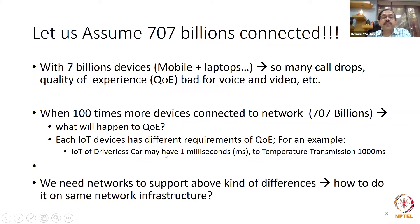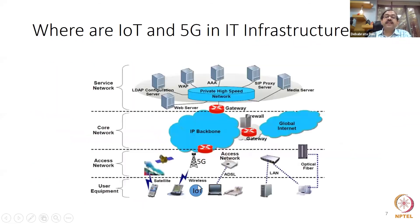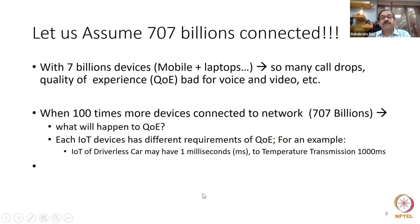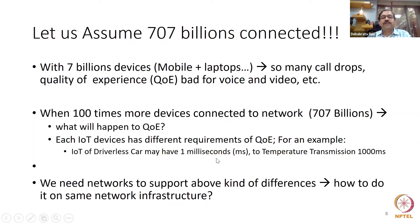Same infrastructure — like the same road — two kinds of demand: how to do that? It's not easy. We need a network to support the above kinds of differences. Quality of service from one millisecond to thousand milliseconds in the wireless network, and from 7 billion to 707 billion devices — how to support this in the same network infrastructure? That is the challenge.